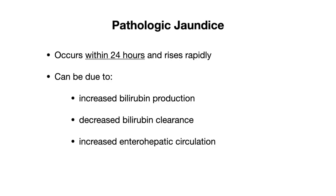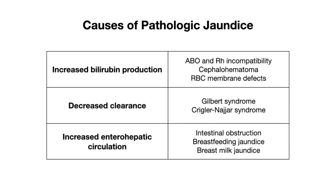Pathologic jaundice, as mentioned, occurs within 24 hours and rises very rapidly. Just like physiologic jaundice, pathologic jaundice can be due to increased bilirubin production, decreased bilirubin clearance, or increased enterohepatic circulation. Increased bilirubin production can include ABO and RH incompatibility leading to hemolytic disease of the newborn, as well as cephalohematoma — blood accumulating under the scalp from birth trauma — leading to RBC breakdown and bilirubin formation. Other causes include RBC membrane defects such as hereditary spherocytosis. Decreased clearance can occur with Gilbert syndrome and Crigler-Najjar syndrome, which involve the UGT enzymes. Increased enterohepatic circulation can occur with intestinal obstruction due to delayed bilirubin excretion, as well as breastfeeding jaundice and breast milk jaundice.